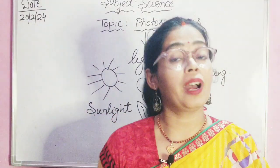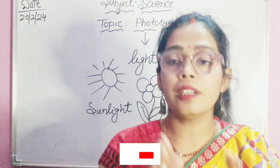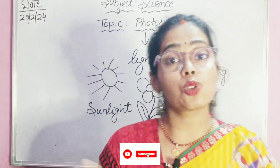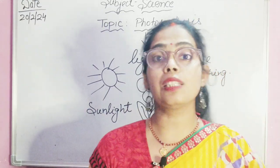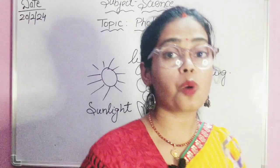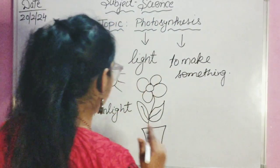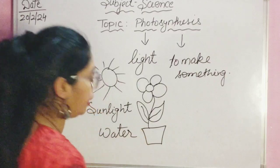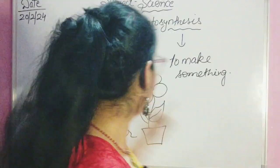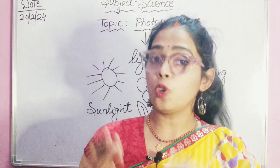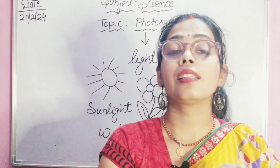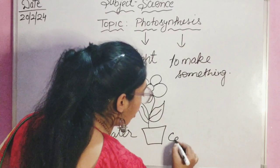Just like your mother adds all the ingredients when making food in the kitchen, plants also need many ingredients. The first ingredient is sunlight. The next important one is water — sunlight and water are two key things through which plants make food. And the third is carbon dioxide.